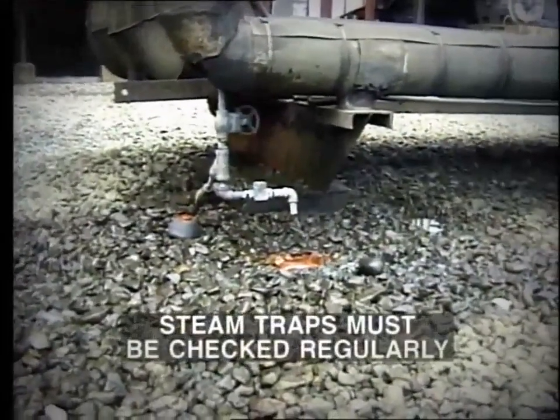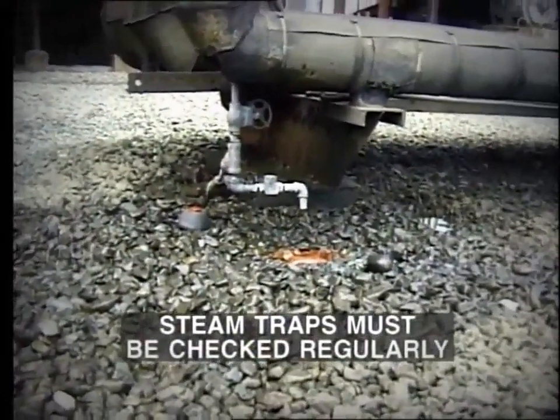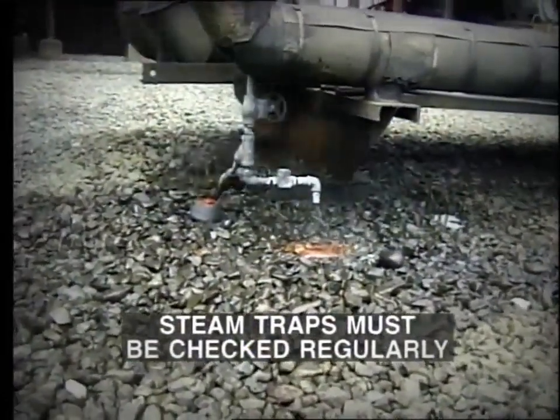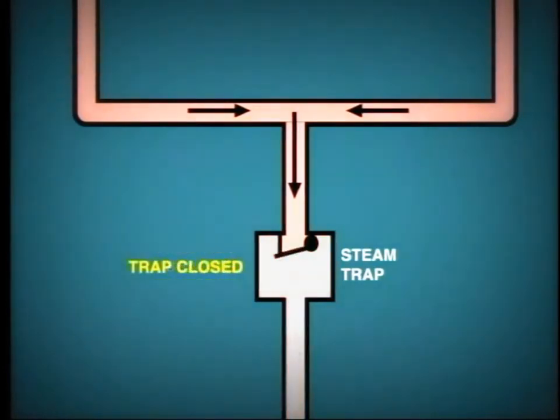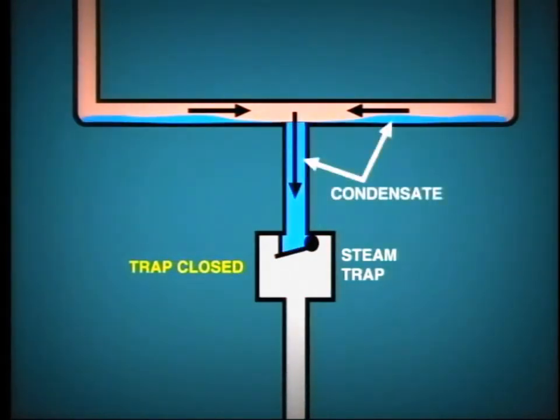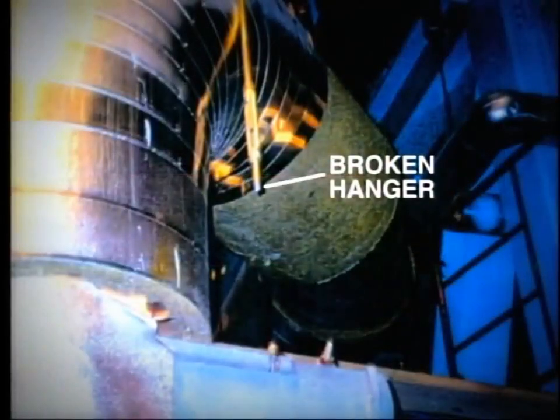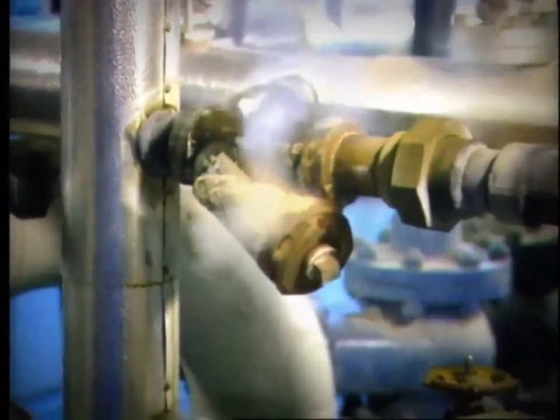The operator should regularly check that the steam traps are functioning correctly, that is, to discharge condensate in regular bursts. If the steam trap is not sealing properly, it will pass steam continuously and so be a source of considerable waste. Conversely, if the trap remains closed, then condensate will accumulate inside the auxiliary steam piping. In this case, we will probably be made aware of the problem by water hammer in the pipework. This occurs as the water flashes into steam intermittently. The water hammer can produce considerable mechanical movement and shock to the steam pipework and may result in broken hangers and supports, as well as leaks at valves and other equipment connections.